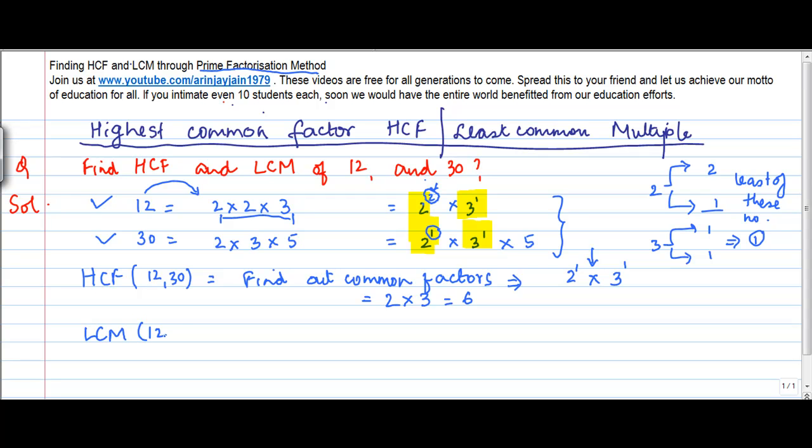Now, how about the LCM or least common multiple? To find the LCM, you pull out all the primes that appear in the factors. So you have 2, 3, and 5 with multiplication signs between them.